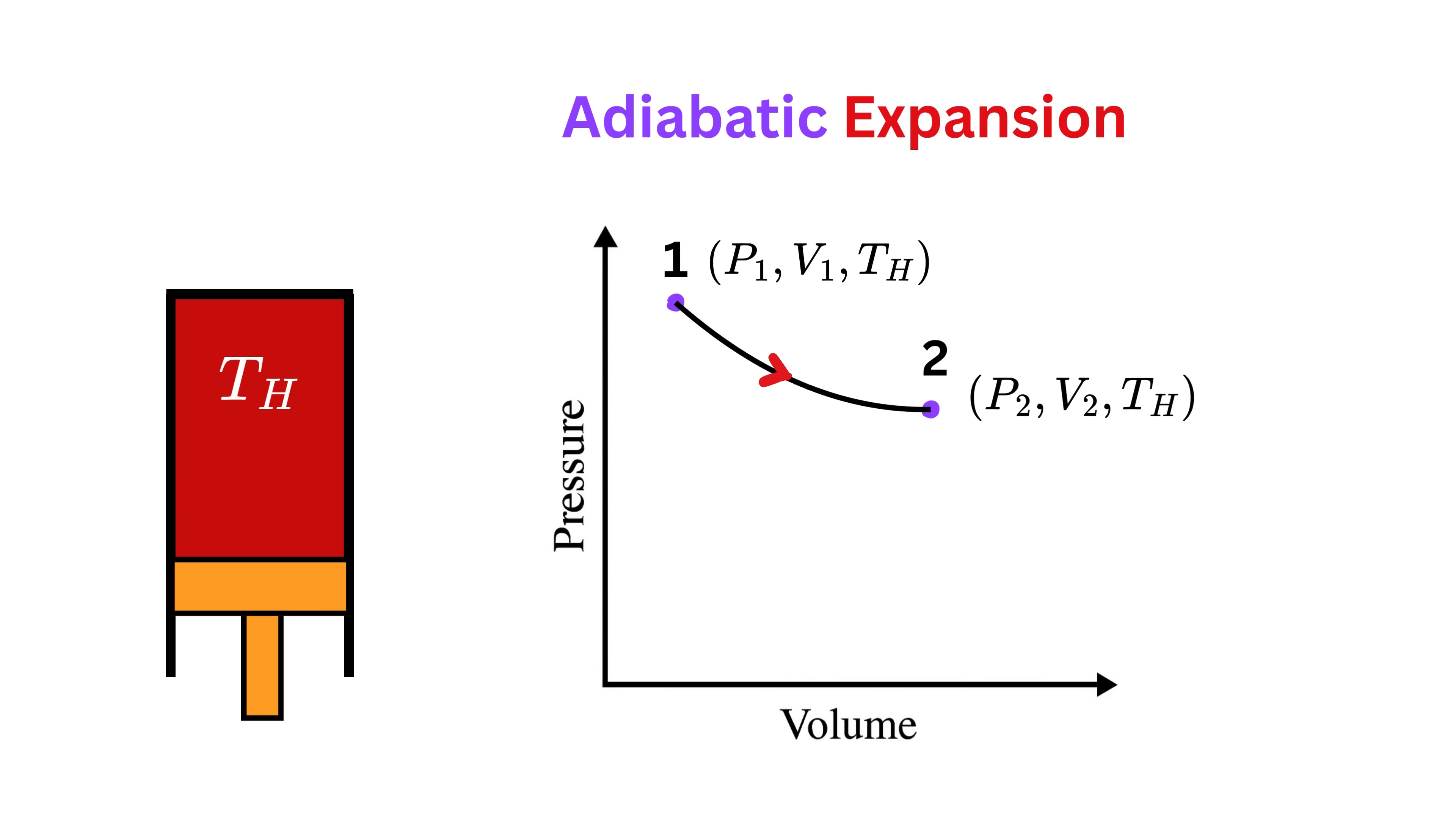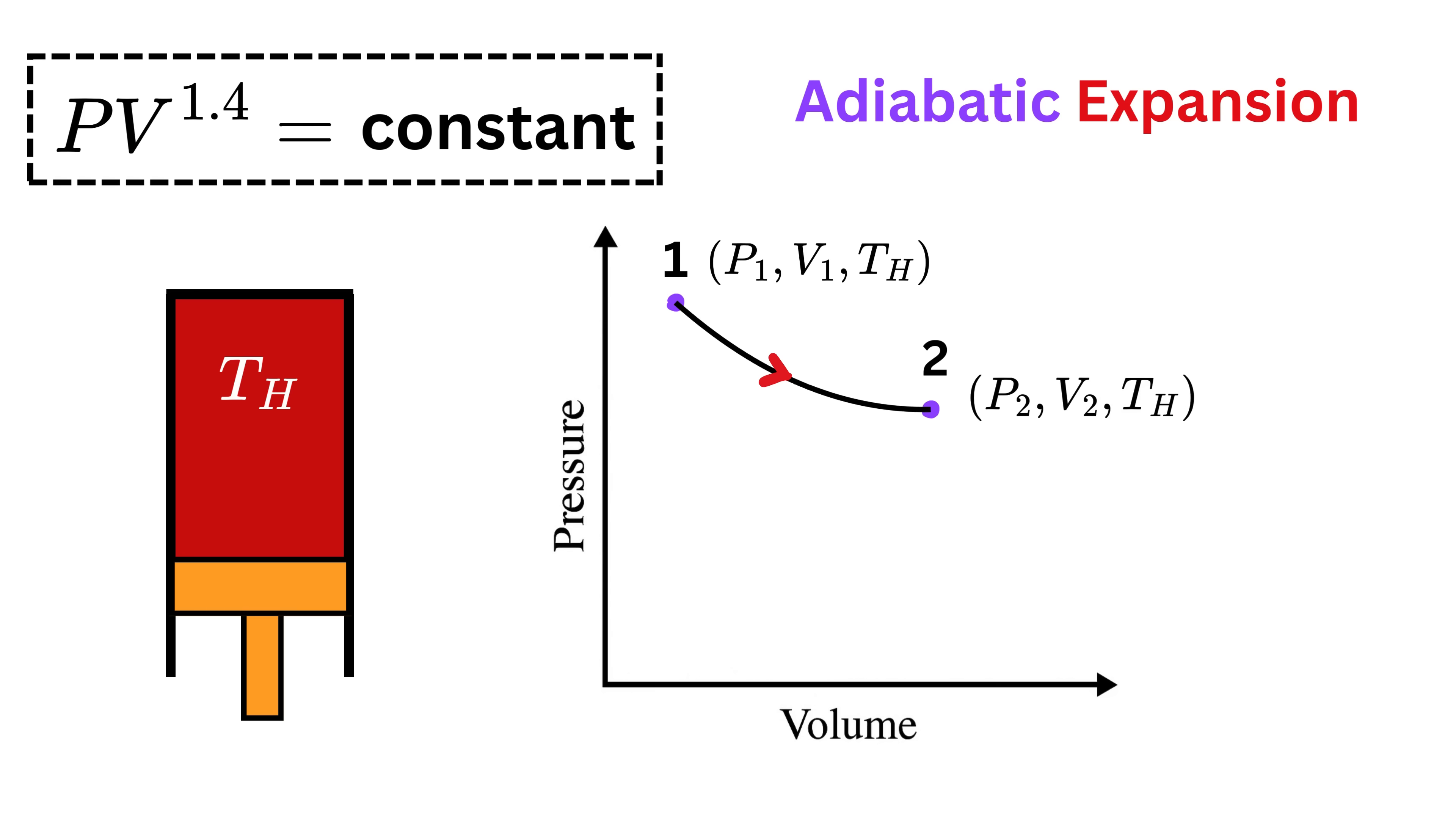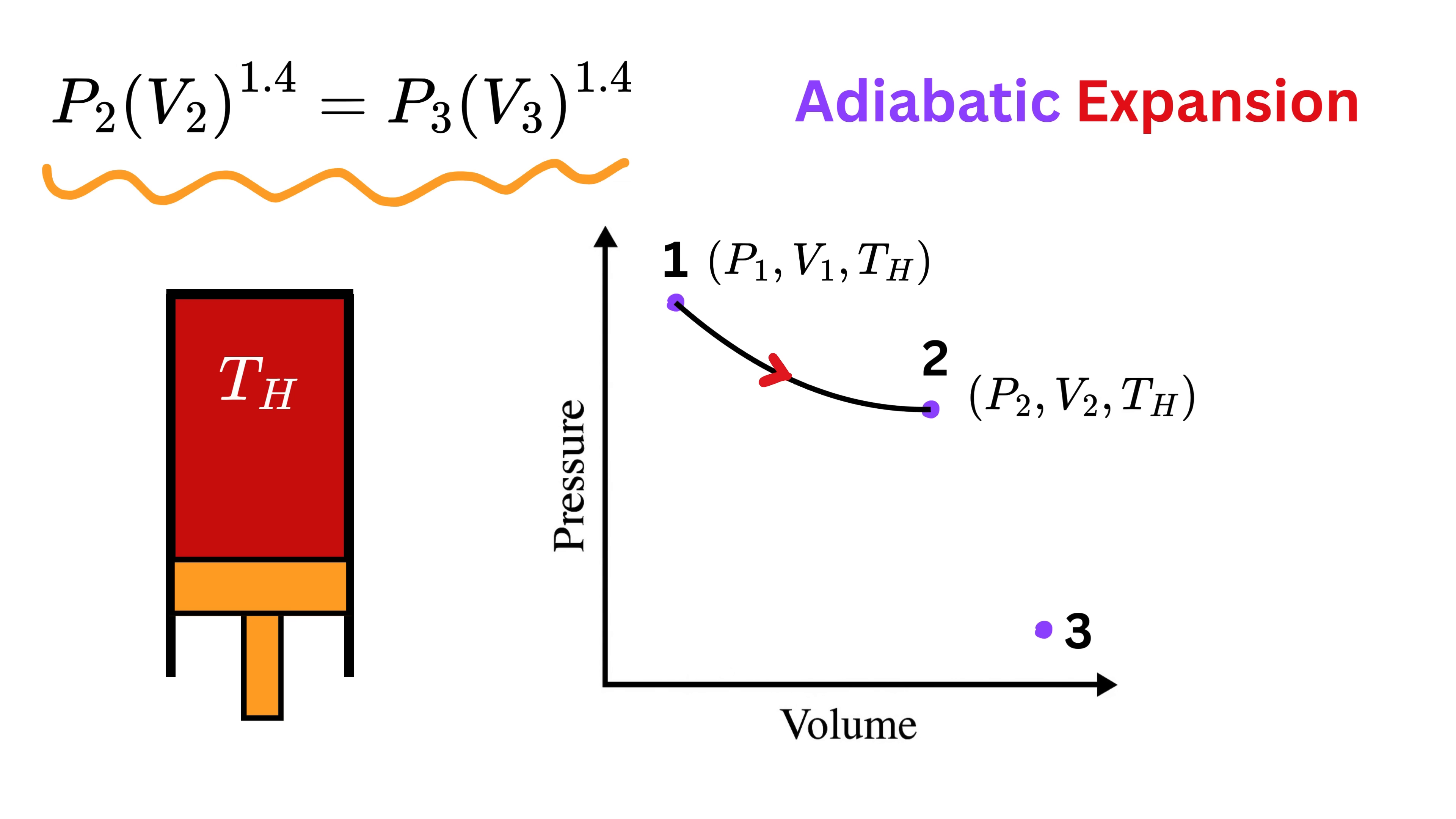Now let us track this process on the PV diagram. You know what, for an adiabatic process, the relation between pressure and volume is given by this rule which I have mentioned earlier. So we get this relation between pressure and volume at point 2 and point 3.